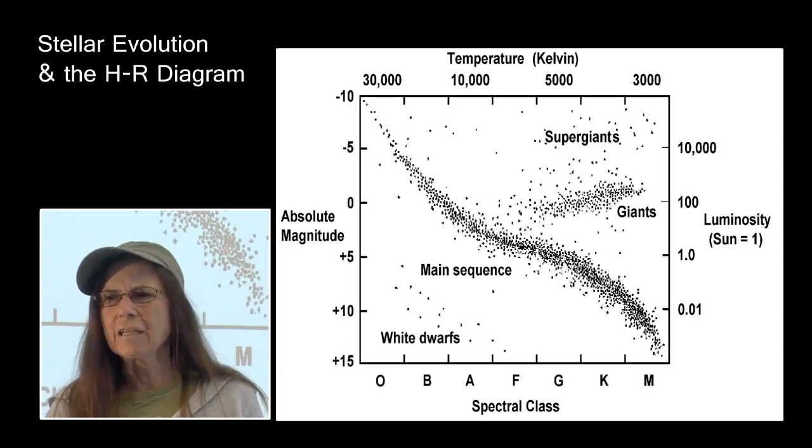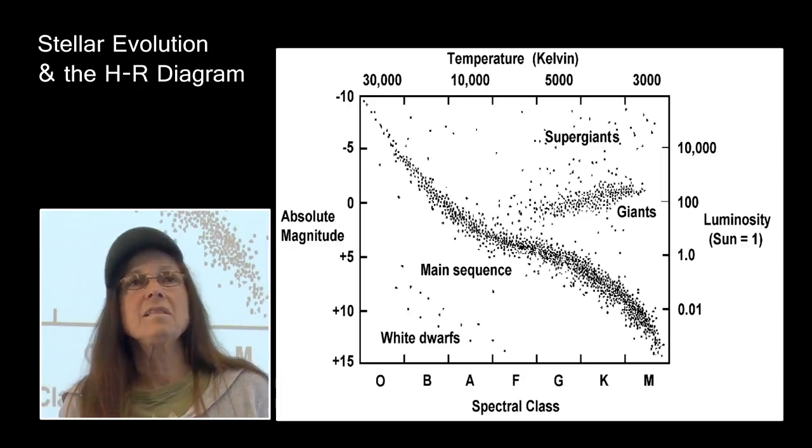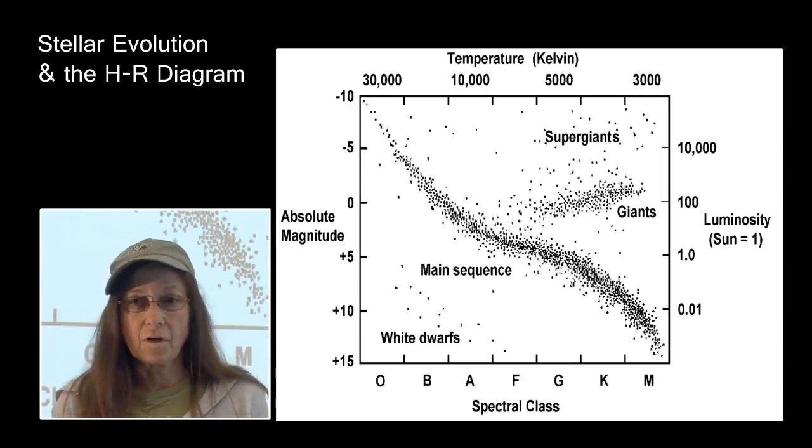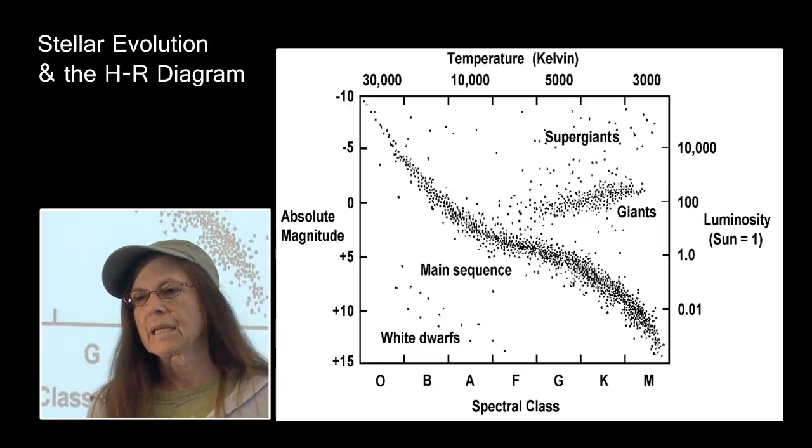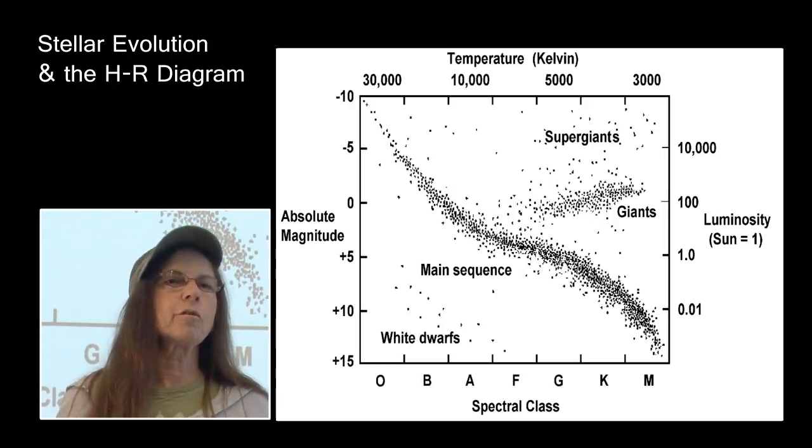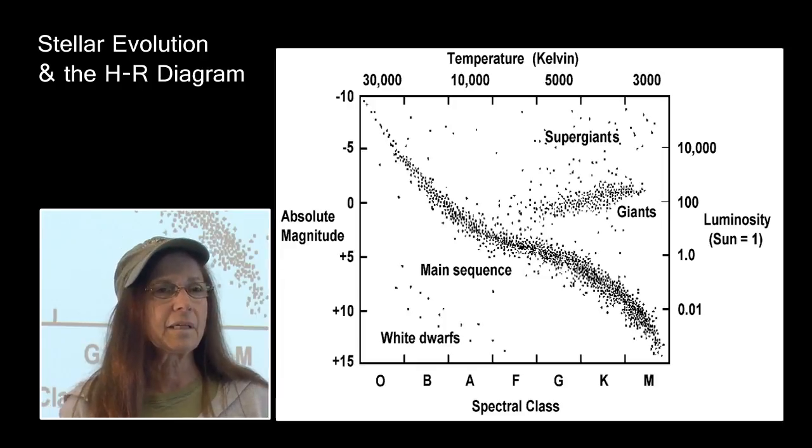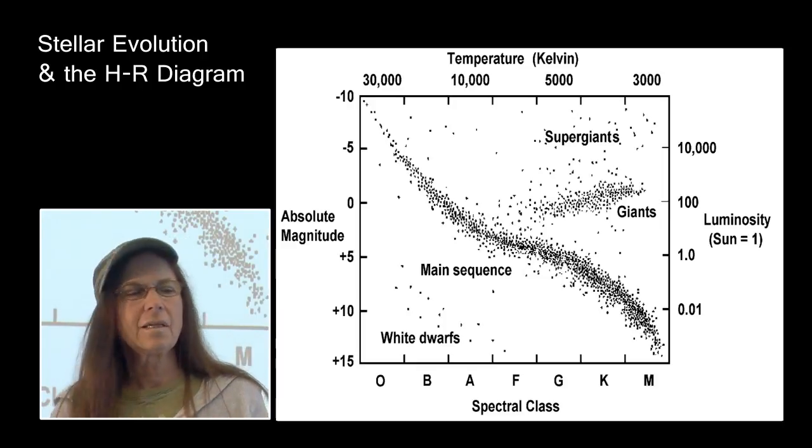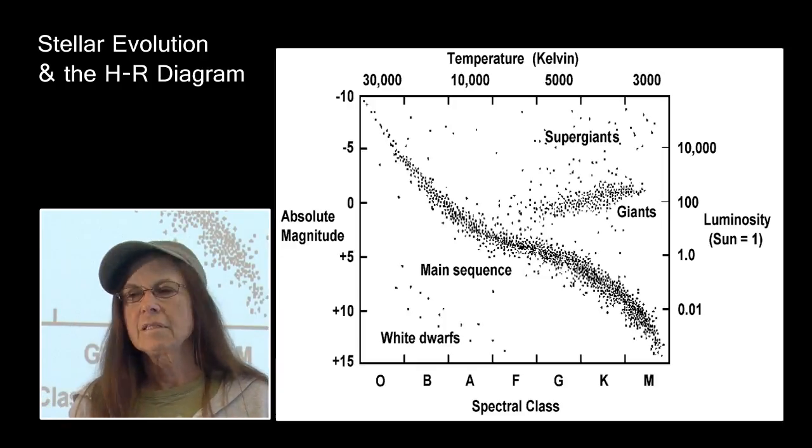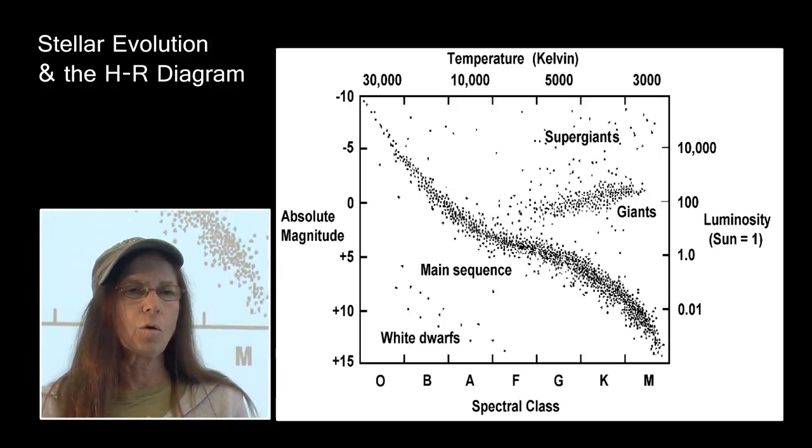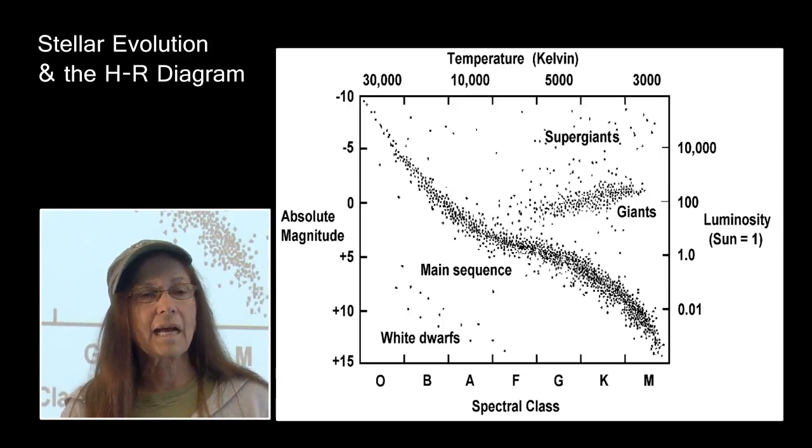you can look at any element on there. You can find a new element and see where it's placed on the periodic table of the elements. And you know absolutely everything there is to know about that element. Its position in the periodic table tells you everything there is to know about that particular element.